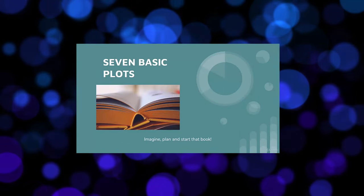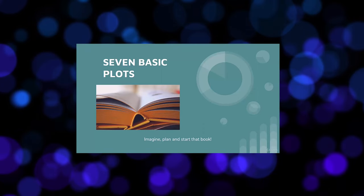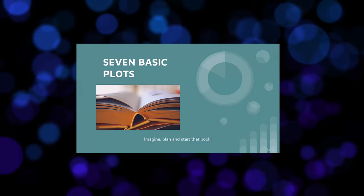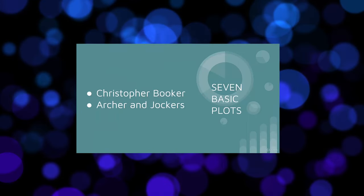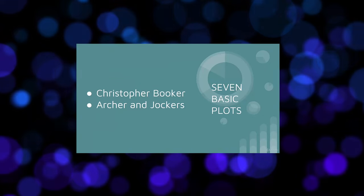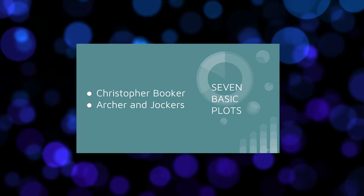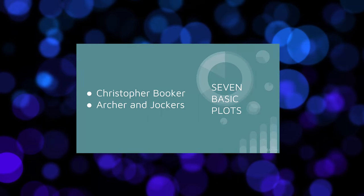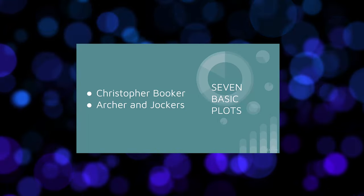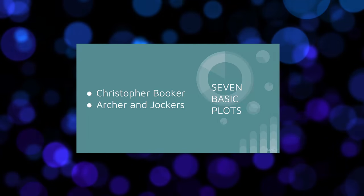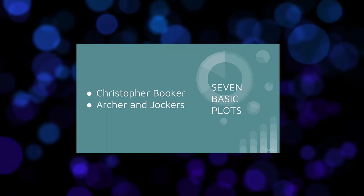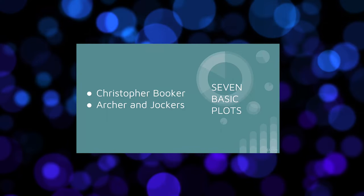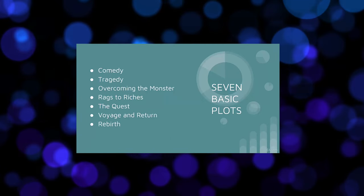Something you might find useful as a writer — and that I've become increasingly convinced about over the years — is a theory that there are seven basic plots. The seven basic plots were originally identified by Christopher Booker based on his extensive reading. These have actually been confirmed by more recent research — some textual analysis done with computers by a pair of researchers called Archer and Jockers, who identified exactly the same seven basic plots that Christopher Booker had described.